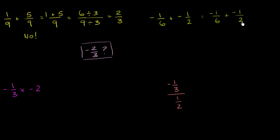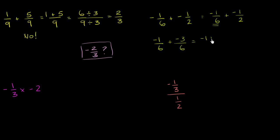We see that 6 is already a multiple of 2, so we can leave the first fraction as negative 1 over 6. For the second fraction, we can rewrite it as something over 6. To go from 2 to 6 we multiply by 3, so we also multiply the numerator by 3: negative 1 times 3 is negative 3. So negative 1 sixths plus negative 3 sixths is negative 1 plus negative 3 over 6, which equals negative 4 over 6.